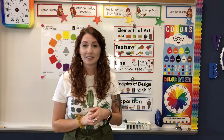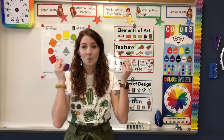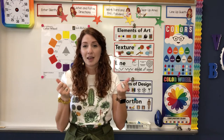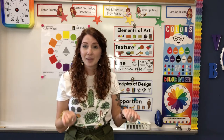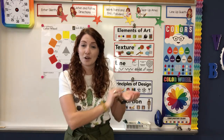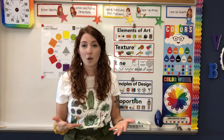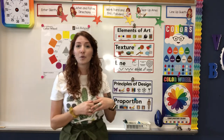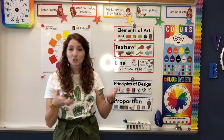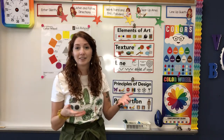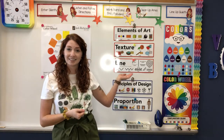Texture is the way something looks or feels, and because we can't actually feel the texture of the fur for our animal on our paper, we're going to have to draw what that looks like. This is called implied texture, and we're going to show our implied texture using different lines.